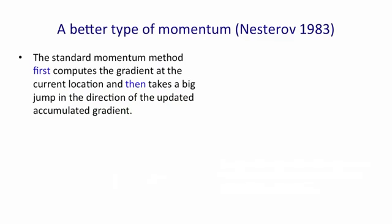Very recently, Ilya Sutskever has discovered that there's a better type of momentum. The standard momentum method works by first computing the gradient at the current location. It combines that with its stored memory of previous gradients, which is in the velocity of the ball, and then it takes a big jump in the direction of the current gradient combined with previous gradients. So that's its accumulated gradient direction.